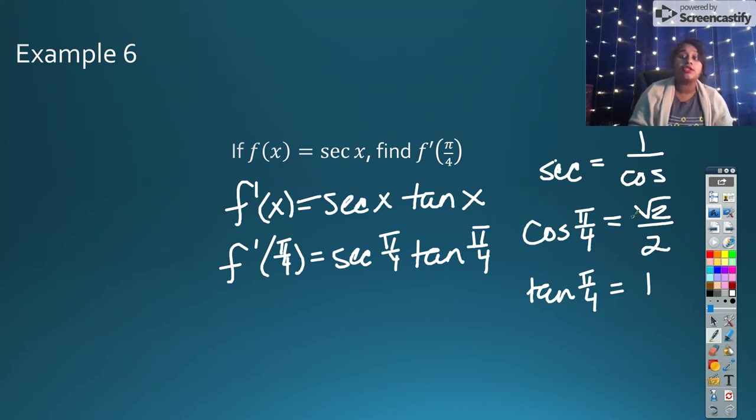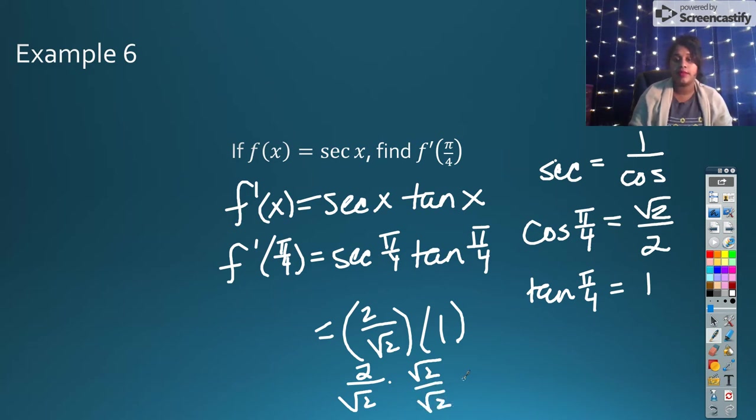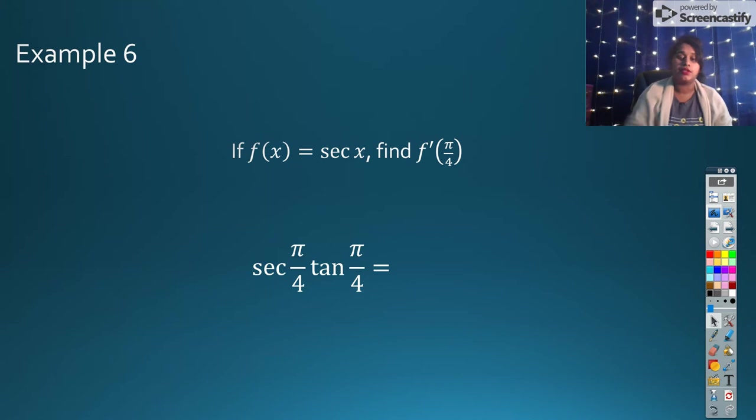Now we're not actually going to use square root of 2 over 2 because we're talking about secant. Secant is the reciprocal. So this is going to be equal to 2 over the square root of 2 times 1. Anything times 1 is simply itself. So we're looking at 2 over the square root of 2. If I wanted to get rid of that radical, I conjugate, multiply by square root of 2 over 2, and that becomes 2 square root of 2 over 2, and I can cancel that out. And I'm left with just the square root of 2 as my answer.